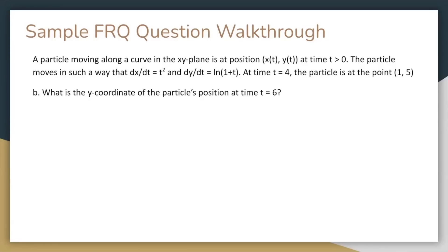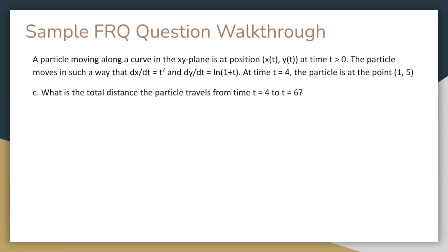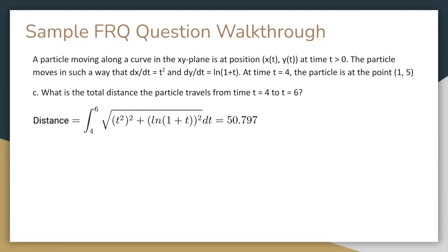Part B: What is the y coordinate of the particle's position at time t equals 6? Remember that the y displacement, or change in y, is equal to the integral of the y velocity from t equals 4 to 6. You want to solve for y of 6, so you move y of 4 over to the other side, and you can use your calculator to evaluate the integral from 4 to 6 of ln of (1 plus t) dt. Since you're given y of 4 equals 5 in the problem, the answer is approximately 8.574. Part C: What is the total distance the particle travels from time t equals 4 to t equals 6? The formula for distance is the integral of speed from t equals 4 to 6. We've seen the formula for speed in part A, and we can use a graphing calculator to get the answer, which is approximately 50.797.